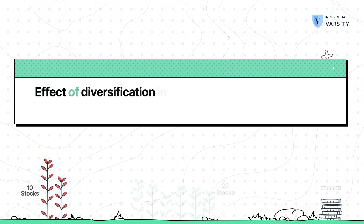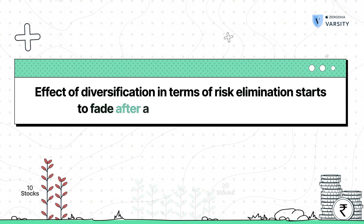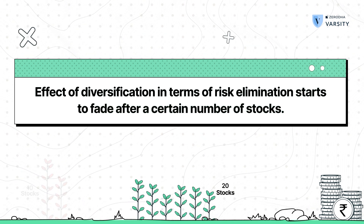Here is a quick comparison of how the daily standard deviation and the volatility stack up for the one-stock, two-stock, and three-stock portfolios. As you continue to add more stocks, the unsystematic risk of your portfolio reduces further — which is why they say you shouldn't put all your eggs in one basket. However, research says that the effect of diversification in terms of risk elimination starts to fade after you add a certain number of stocks.